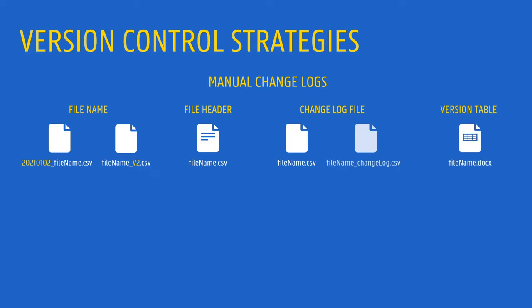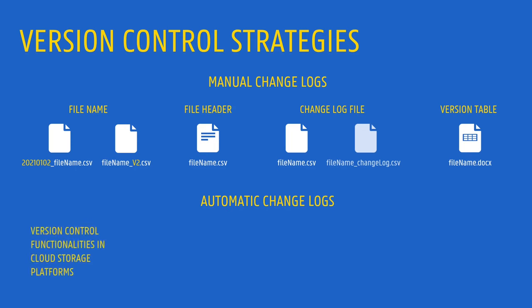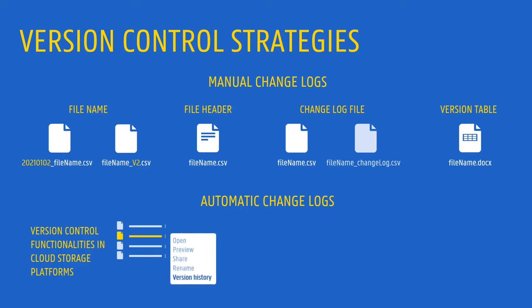Besides, there are different tools that can be used to maintain version control automatically. These can be especially useful when you are collaborating with others and multiple changes are done regularly by different people. Many cloud storage platforms include version control functionalities, which allow you to see the version history of a file and restore previous versions. In software or code development, Git or Git-based tools such as GitHub or GitLab are very popular version control platforms.